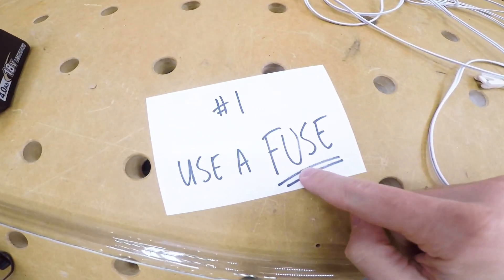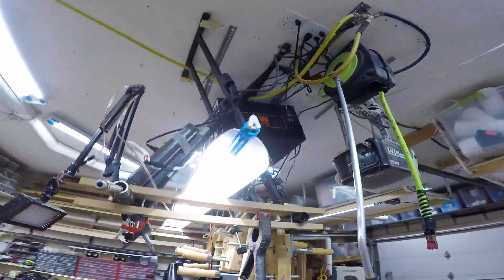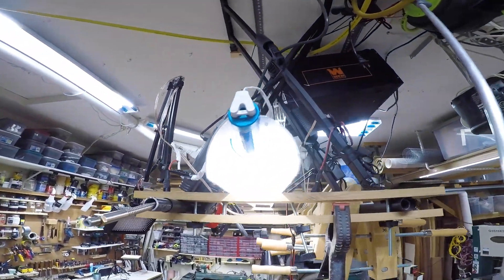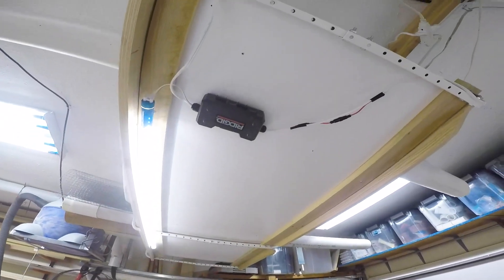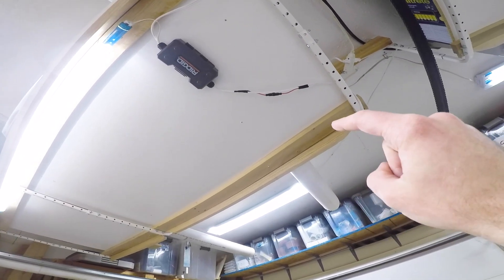Tip number one, use a fuse. If you're doing any sort of custom lighting with custom wiring like that, definitely use a fuse to protect yourself or your shop from things you're not thinking about. In this case, that fuse there is rated at half an amp.